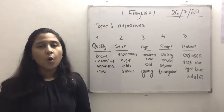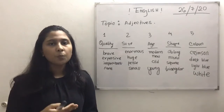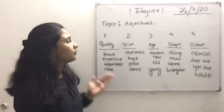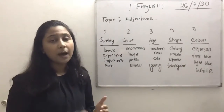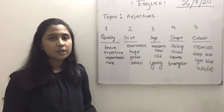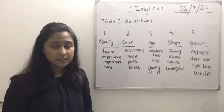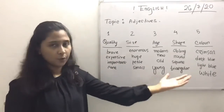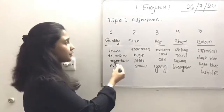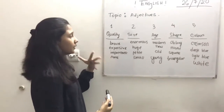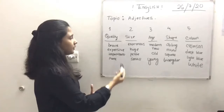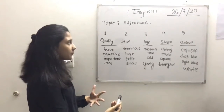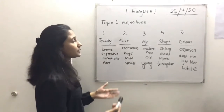When we use two or more adjectives from different groups before a noun, we follow a specific order. First is the adjective of quality — examples include brave, expensive, important, and rare. Next, number two is size.